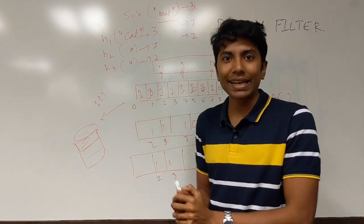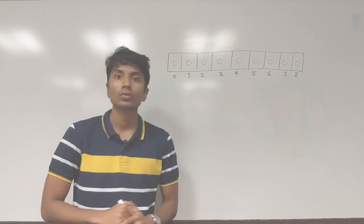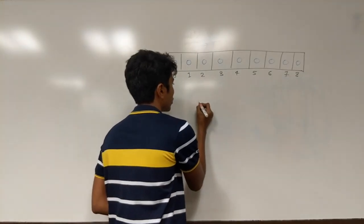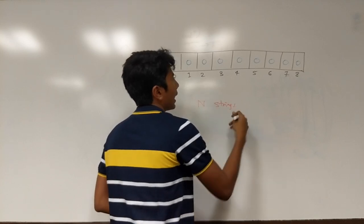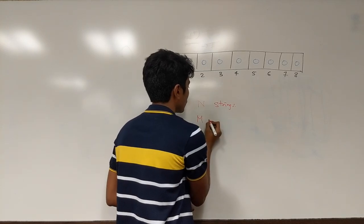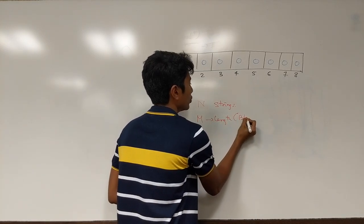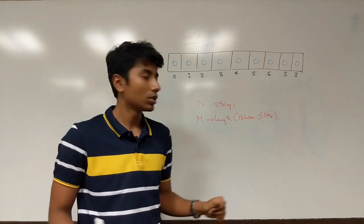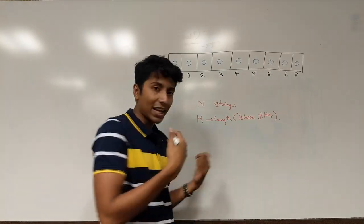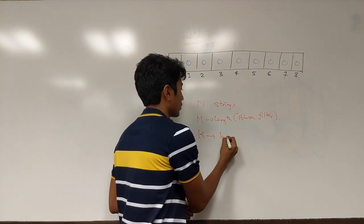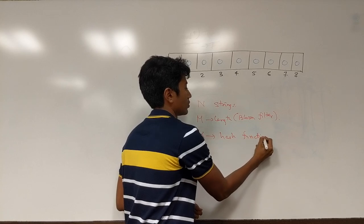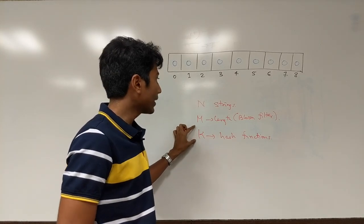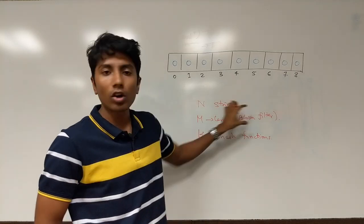Now for the mathematical analysis. Say you have n strings, the length of the bloom filter is m, and the number of hash functions is k. For each string, you pass it through k hash functions, setting k bits in the bloom filter of size m.